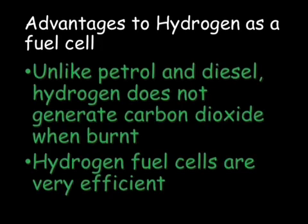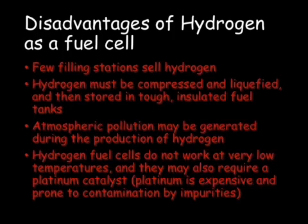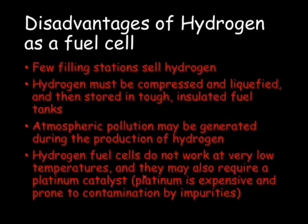Using hydrogen fuel cells has both advantages and disadvantages. The advantages are that it doesn't generate carbon dioxide when burned, so it does not produce a greenhouse gas. They are also very efficient, able to create a large amount of electrical energy from a small amount of fuel. However, at the moment there are very few filling stations where you can get hydrogen. It must be compressed, liquefied, and stored in tough insulated fuel tanks. Atmospheric pollution could be generated during the production of the hydrogen, and most hydrogen is produced from natural gases. Also, they do not work at very low temperatures and require a platinum catalyst, which is expensive and can be easily contaminated.